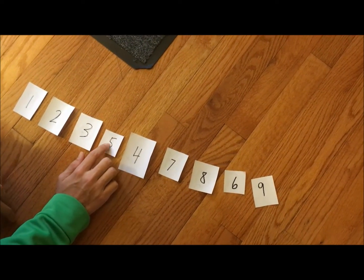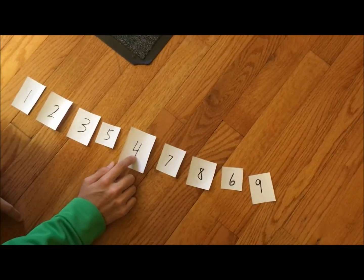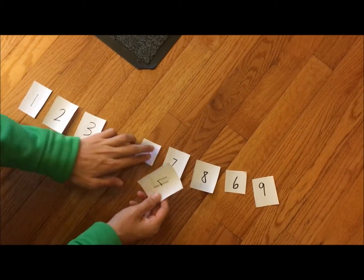Then we take five which is the smallest number again, but then four is even smaller. So we take four and move it over here.